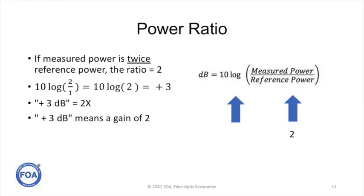Here's another example. Suppose the measured power is twice the reference power. So the ratio of power is 2. 10 times the log of 2 over 1, or 10 times the log of 2, is plus 3. Plus 3 dB means a factor of 2 times in the power ratio, or a gain of 2. You have twice as much power, you have a gain of 2, you have 3 dB.